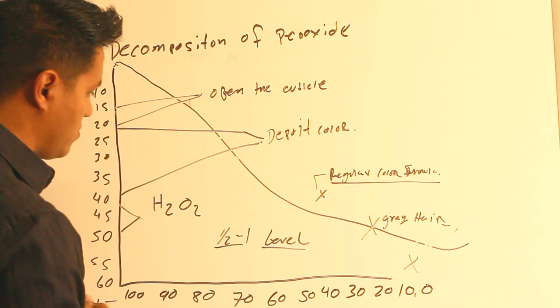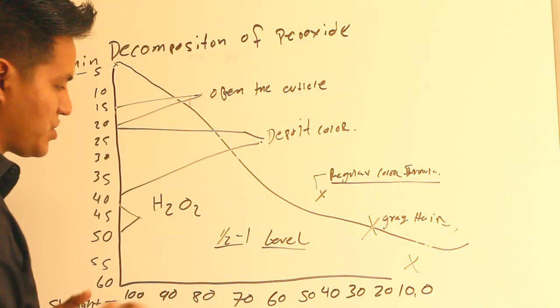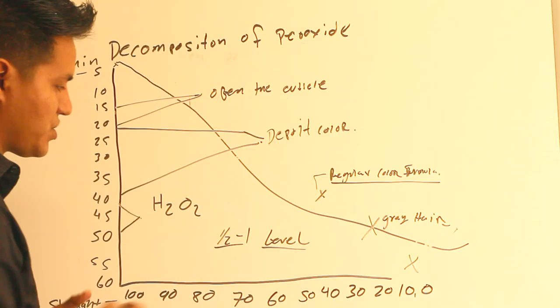This shows 1/3 to 1 level. If the regular color was left for 60 minutes, it would lift 1.5 to 1 level on the desired formula.